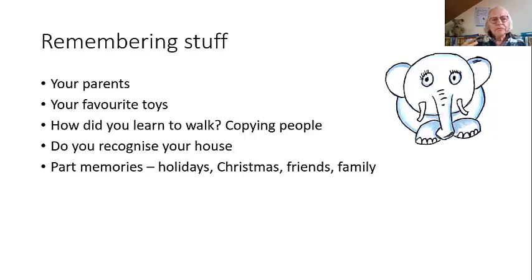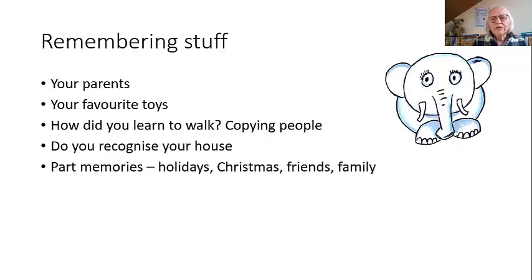So from really young, we can already remember things. We can remember our favorite toys, spot our toys from somebody else's, spot strangers. How did we learn to walk? We looked at other people, kept a copy of that in our heads, and tried to copy what they were doing. How do you recognize your house when you're walking down the street? You've got a picture in your head.